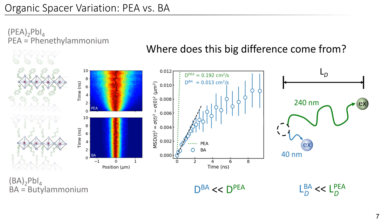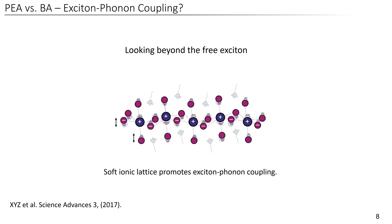One explanation could be the exciton-phonon interactions, and indeed recently studies in both 2D and 3D perovskites have suggested that exciton-phonon interactions are extremely important in perovskites. This is due to the rather soft ionic lattice, which allows the ions to strongly vibrate and phonons to play a crucial role.